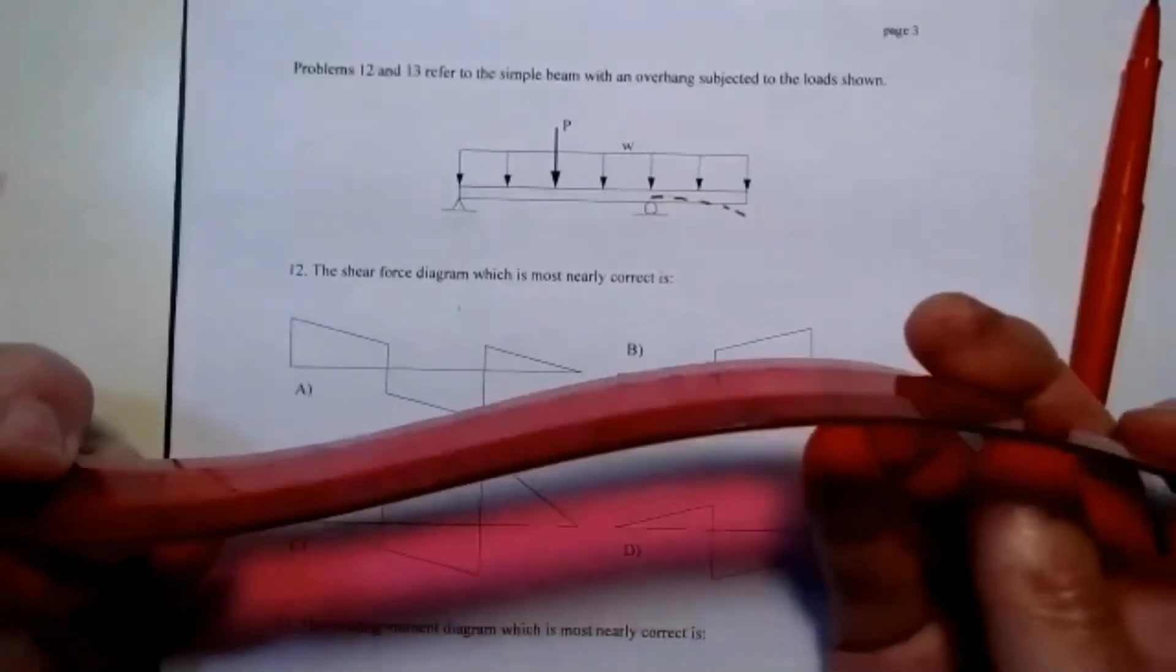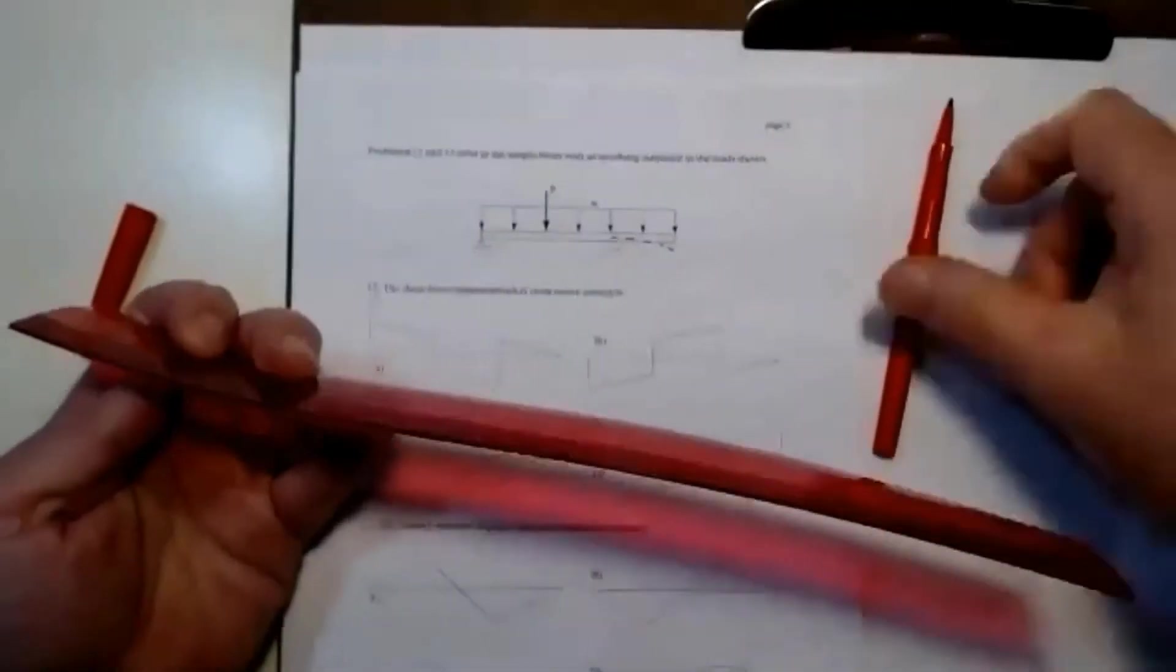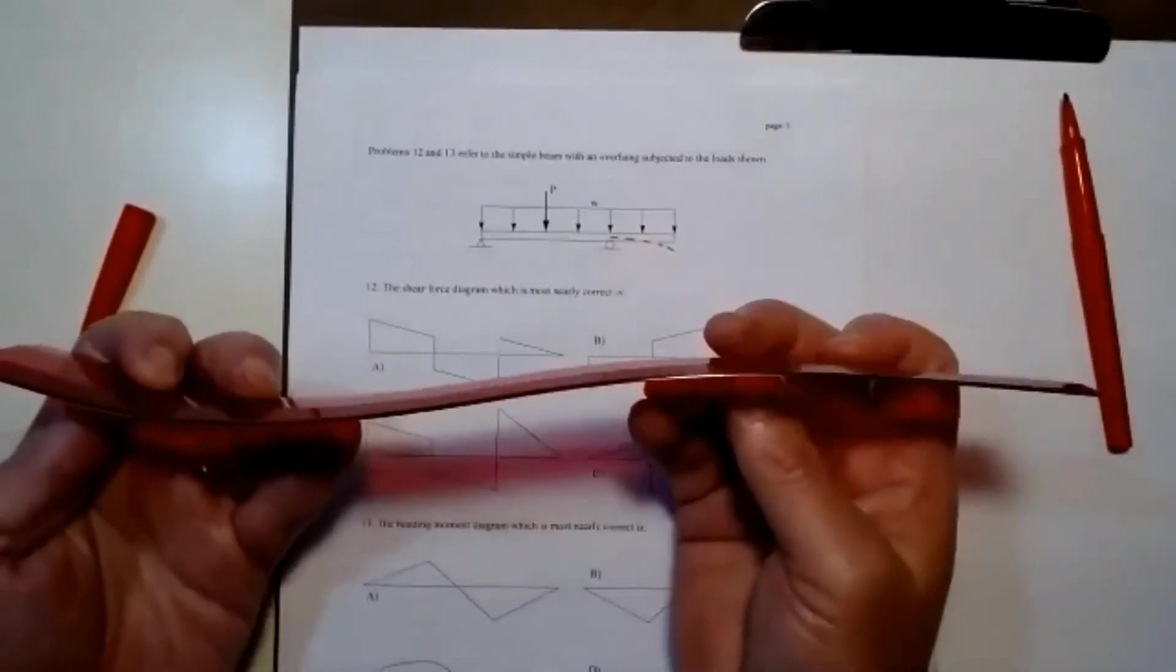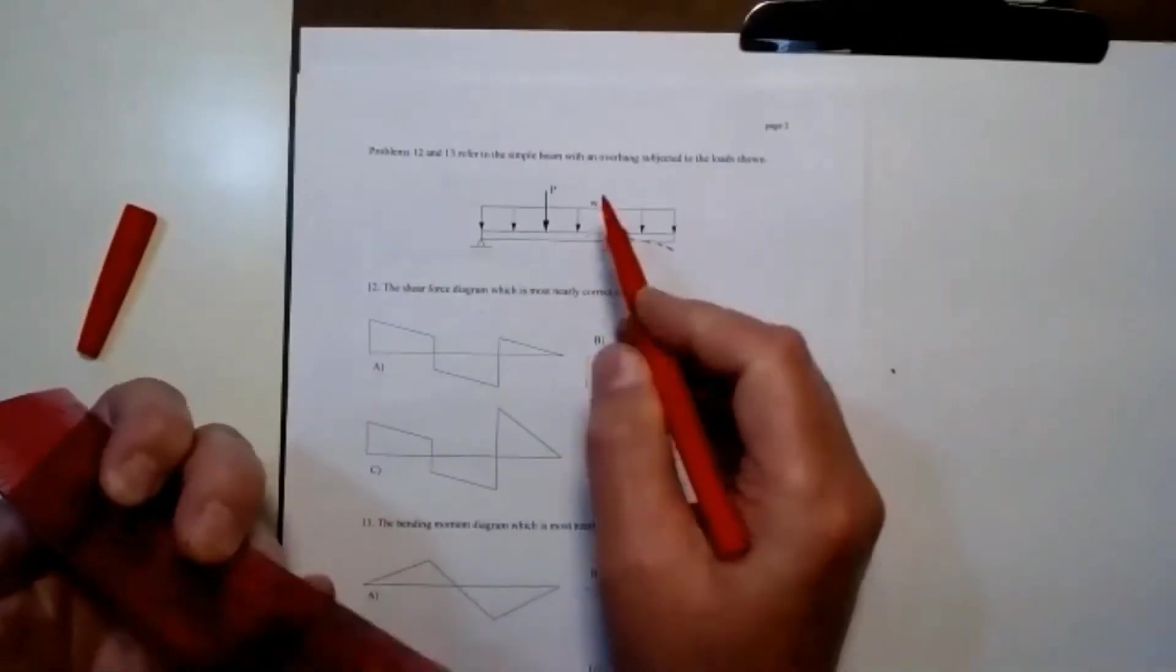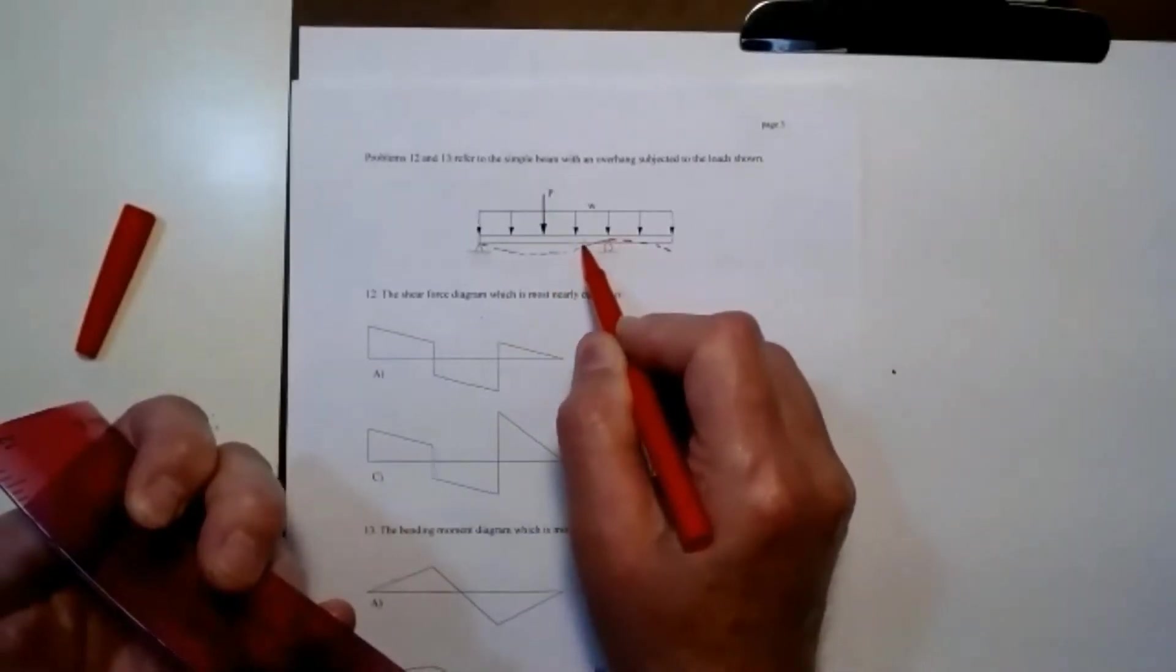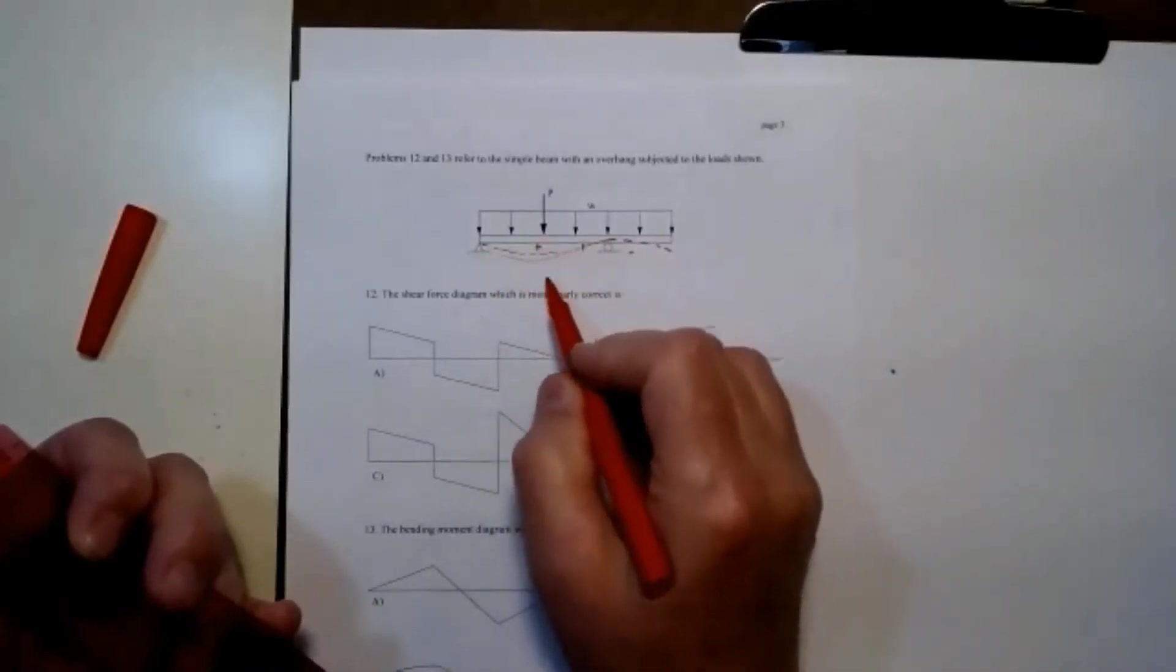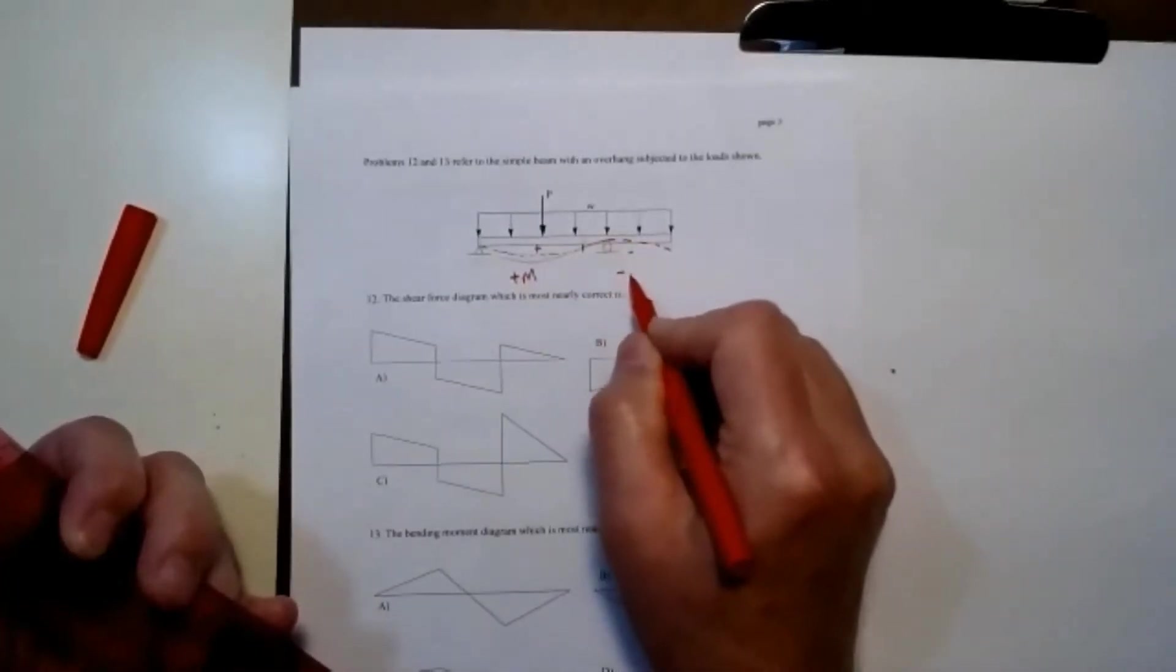So I really expect to get a mixture of conditions here where in this span I'd get something that would be a positive curvature, but then out on the cantilever part I'd get a negative curvature. There's going to be some point of inflection where I go from a positive to a negative curvature. So seeing that shape, I'd expect this portion of the beam to have a positive moment and this portion would have a negative moment.